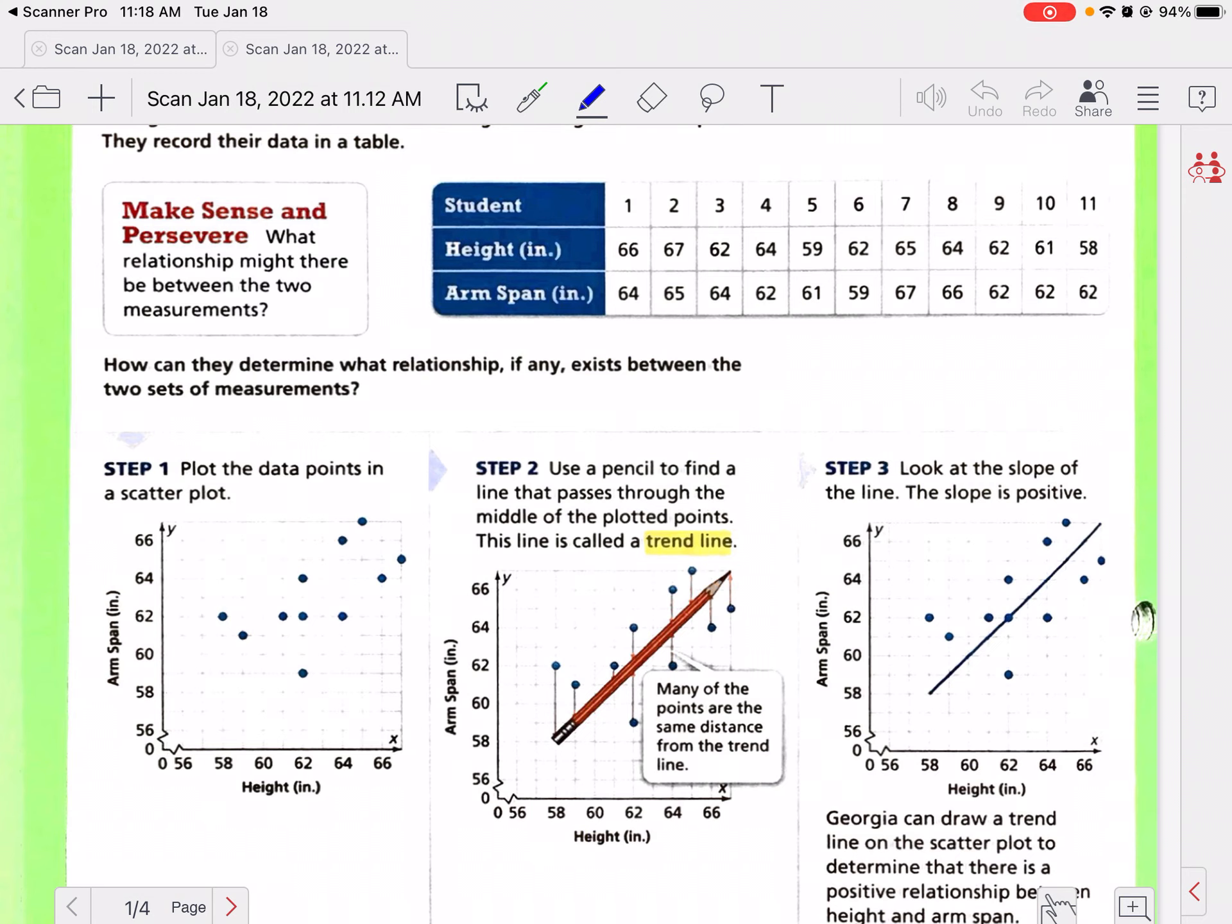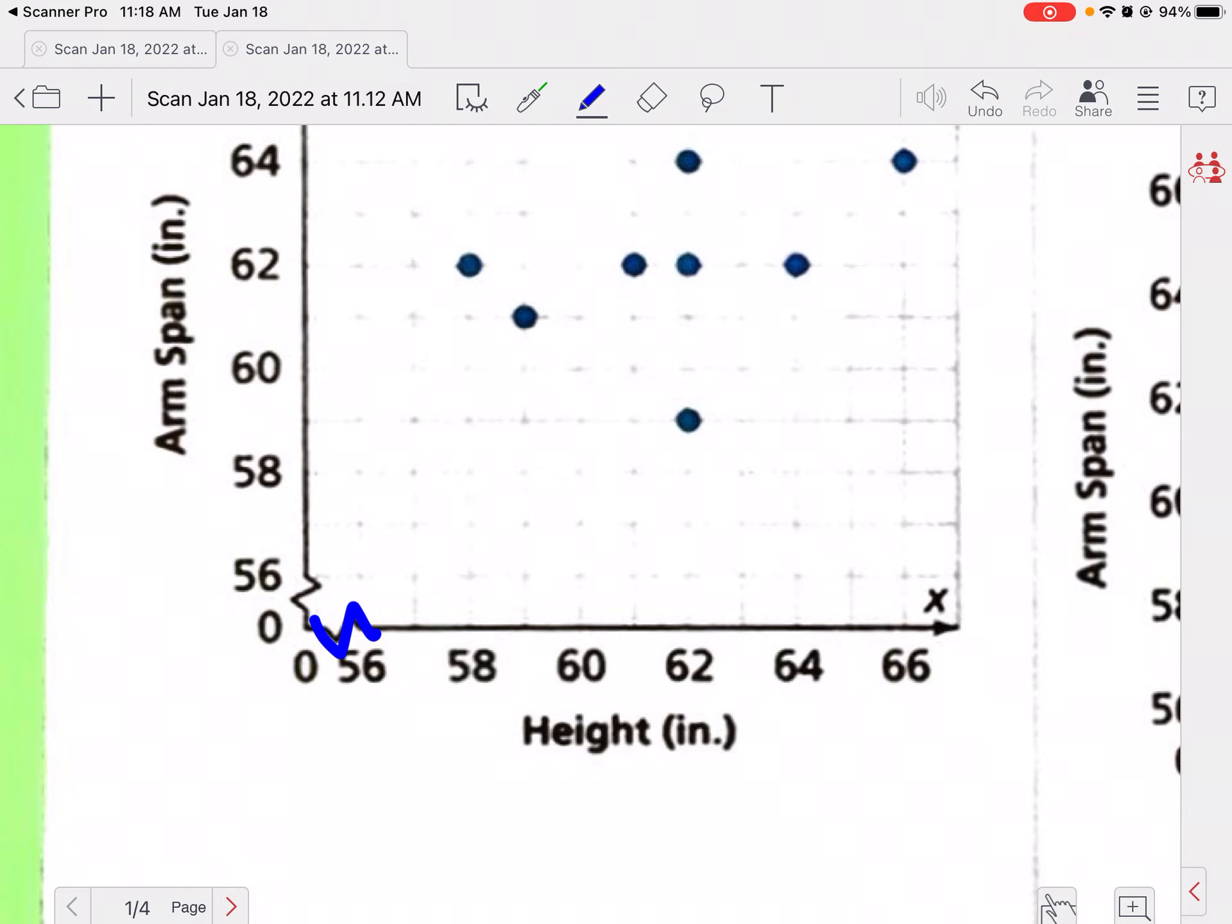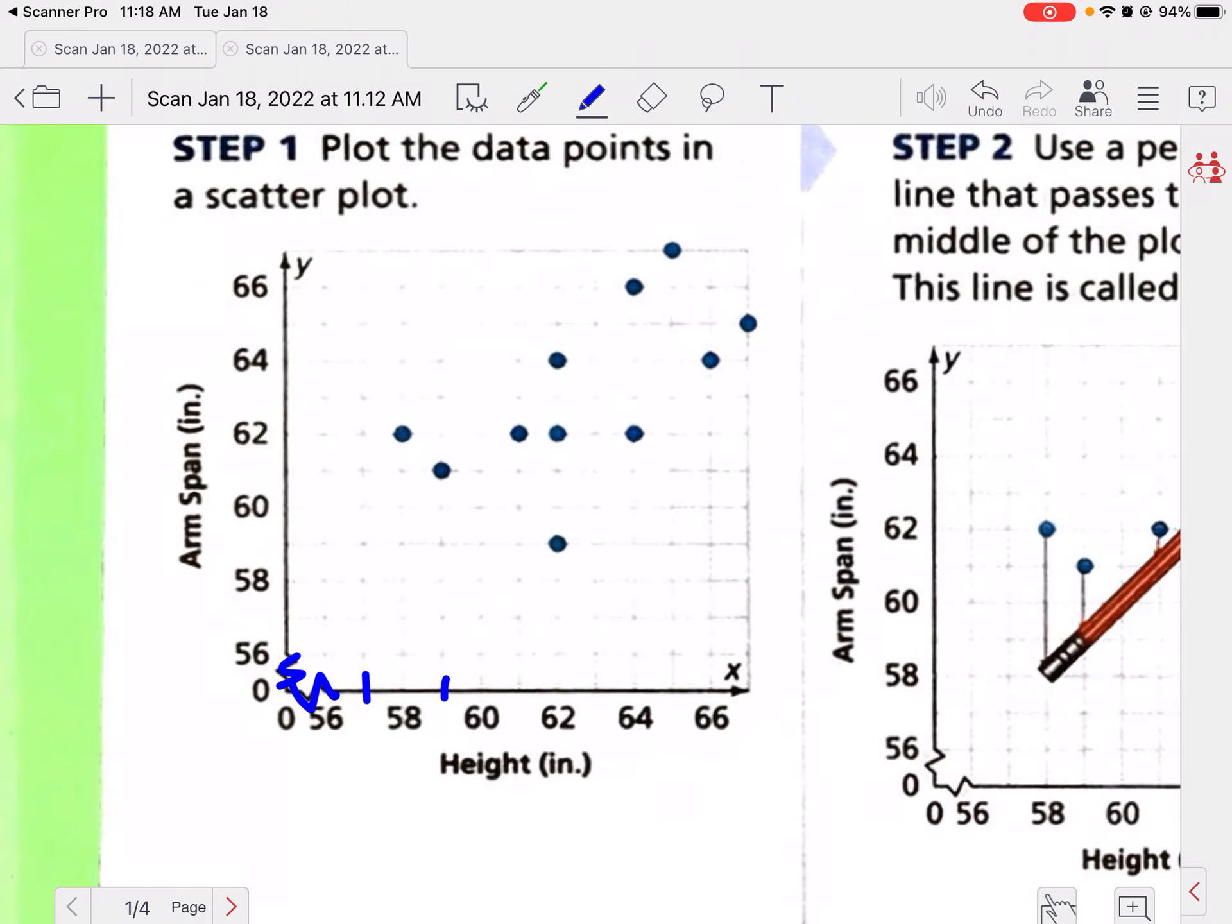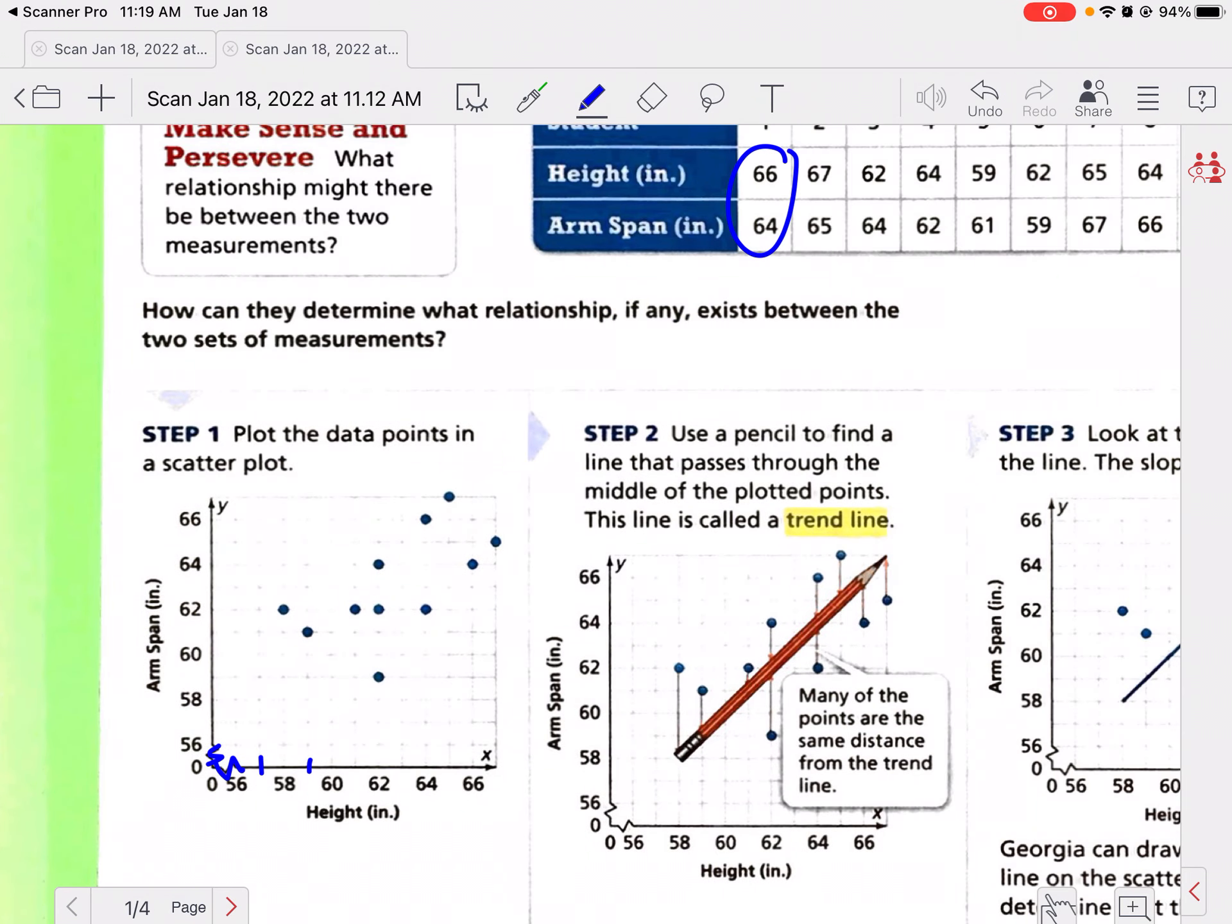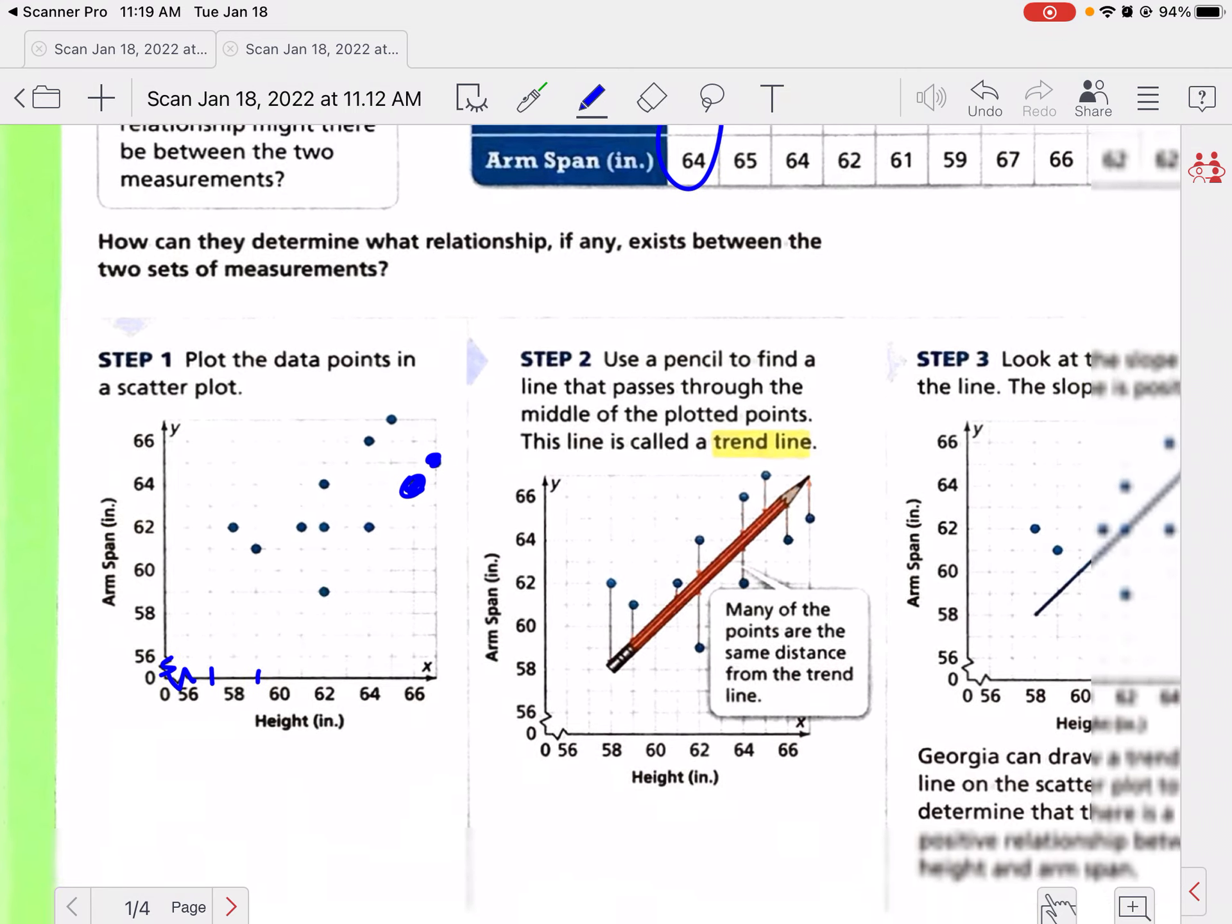We have student 1 through 11, but what they did is they did a graph. They did height and arm span here, and notice they have these little squiggles here. What that means is they skipped a big chunk of information so that way they could start at 56 to 66 and then count by ones. They plotted each point, so they plotted the point 66, 64, which would be right here. If we wanted to do 67 and 65, that would be this point right here, and they plotted all of those points.